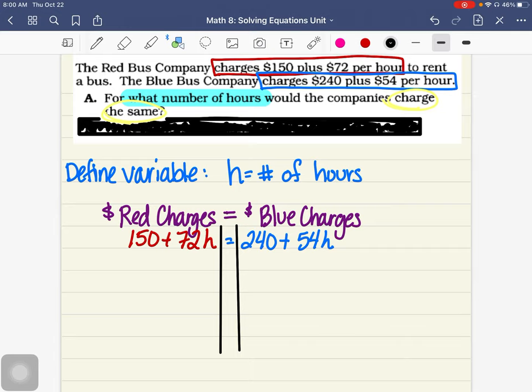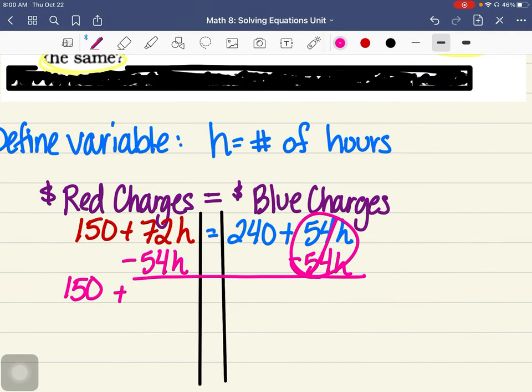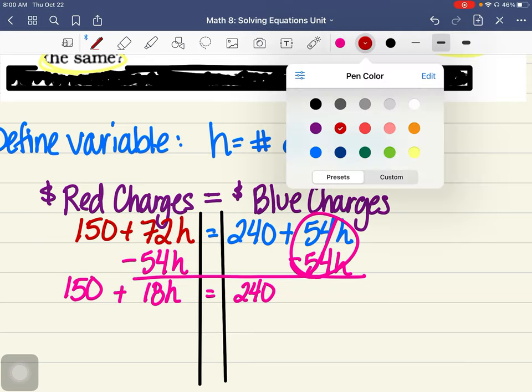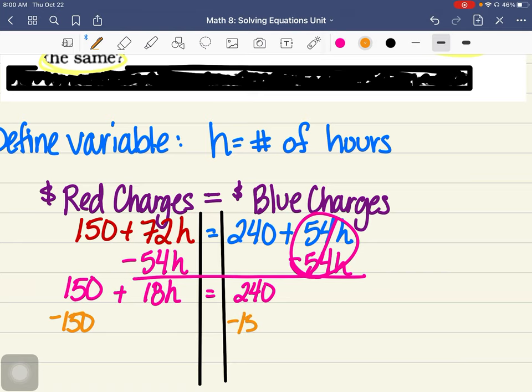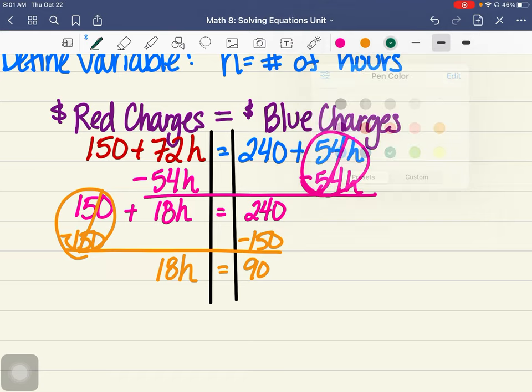And now I'm going to solve this equation. I'm going to go through this pretty quickly. It does have variables on both sides. So smaller to bigger means negative 54H on both sides. I get 150 plus 72H minus 54H, which is 18H, equals 240. I'm going to minus 150 from both sides. I get 18H equals 240 minus 150 is 90. I'm going to divide by 18 on both sides. And H equals 5. 18 goes into 90 five times.